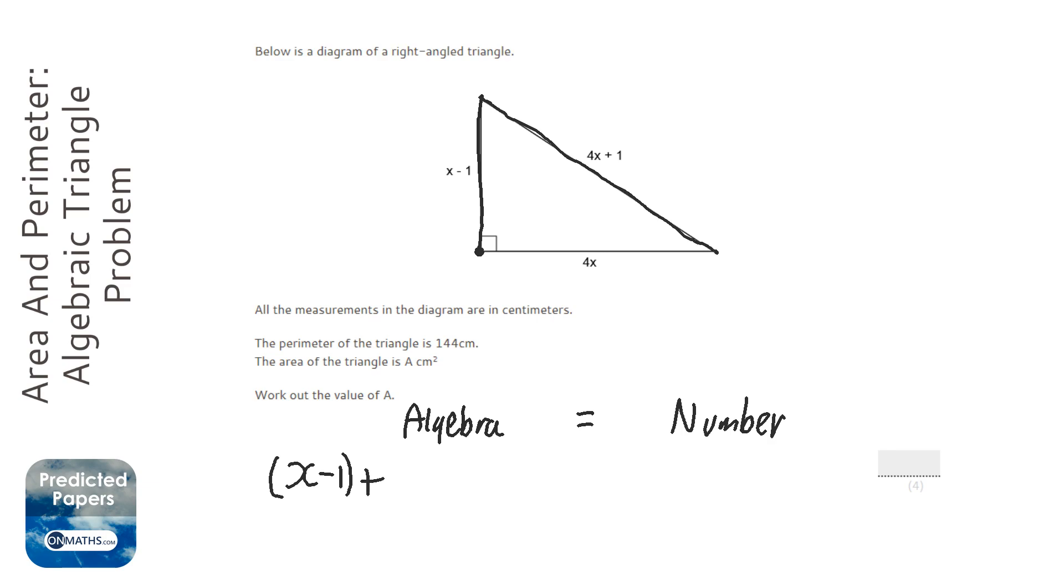Keep walking, and I'm going to add it on to 4x plus 1, and keep walking. We're going to add 4x, and the perimeter is just all the sides added.